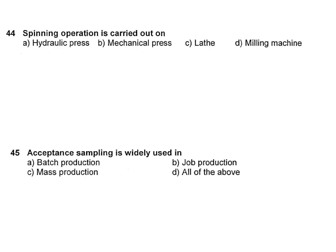Spinning operation is carried out on: A — hydraulic press; B — mechanical press; C — lathe; D — milling machine. The name itself says spinning. You can't spin on a hydraulic press or a mechanical press. Between lathe and milling machine, lathe machine is the answer.